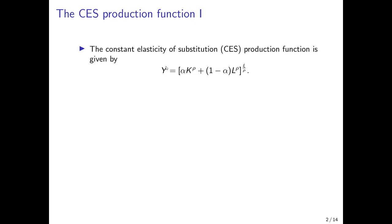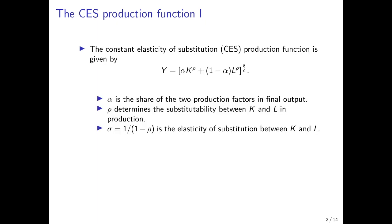The specific form of the CES production function has output on the left-hand side and the two production factors, capital and labor, on the right-hand side. We've normalized productivity to one, and we have a number of parameters that describe how these two production inputs translate into output. The first parameter is alpha, which is basically the share of the two production factors in final output — alpha determines the share of capital, and 1 minus alpha is the share of labor.